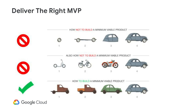Size the scope of your API project right and focus on the minimum viable product. Ask your team: what is the least we need to build that will still deliver business value? The picture here shows three different ways to build a transport device over four releases, with the business goal of getting from point A to point B.